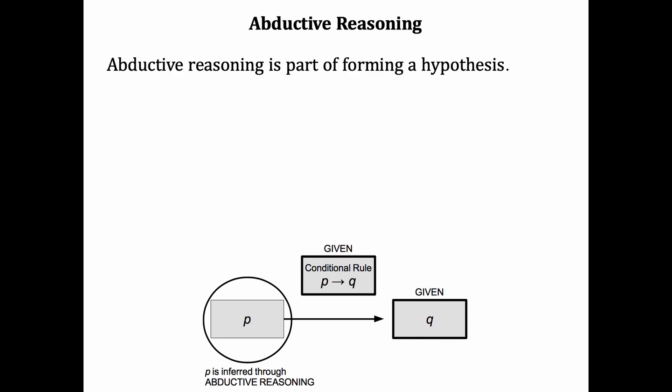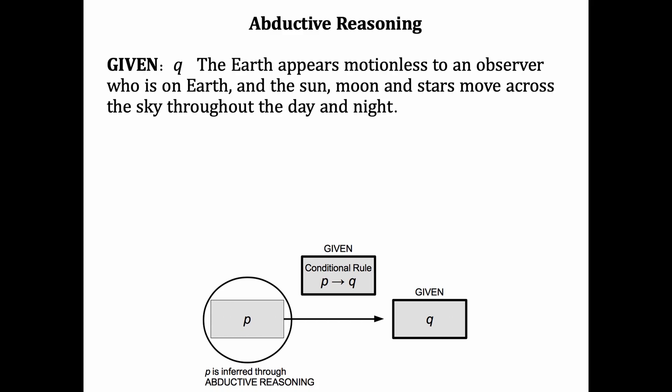Abductive reasoning is part of forming a hypothesis in science. Here's an example from the past. Ancient people observed an effect, Q, that the Earth appears motionless to an observer who's on it. And the sun, moon, and stars appear to move across the sky throughout the day and night. It's something we still observe today. And ancient people wanted to figure out why. Why was this happening? What's the cause for the observed effect?